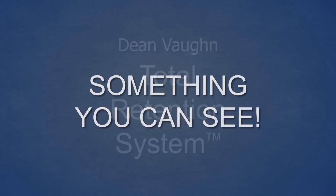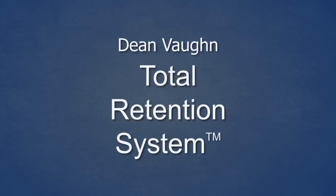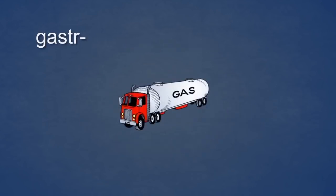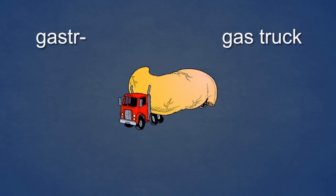It is a unique and important part of the Dean Vaughan Total Retention System. For example, gaster sounds like gas truck — you can see a gas truck. Since gaster means stomach, the gas truck is associated with stomach in such an illogical way that you will surely not forget it. The gas truck has a real stomach for a tank! Just try to forget this! The more illogical the association, the easier it is to remember. Gaster. Gas truck. Stomach.